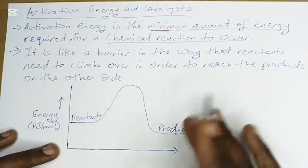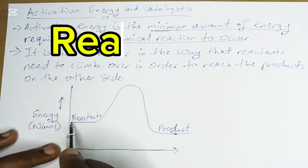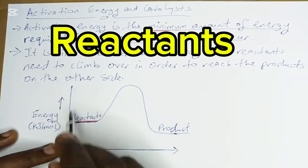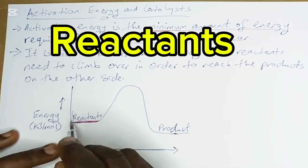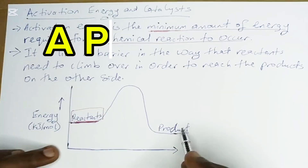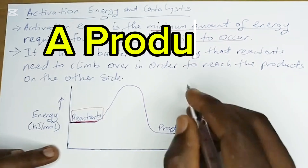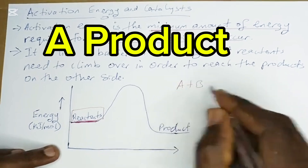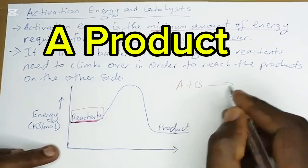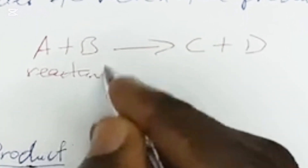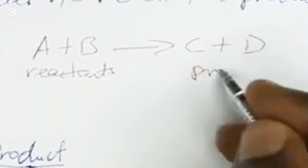For every chemical reaction you always have reactants — those are the things that are coming together, reacting together to form a product. Two things might come together; for example, you might have A reacting with B to give you C plus D. These are the reactants and these are the products.